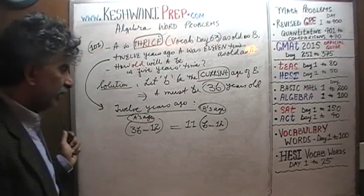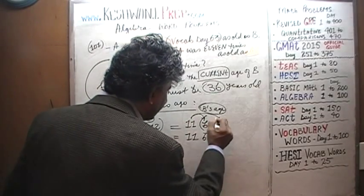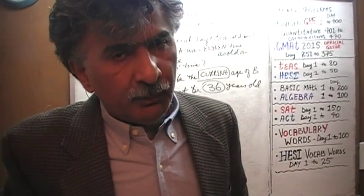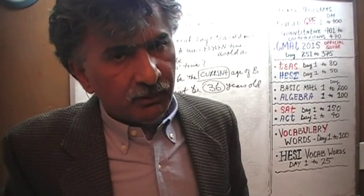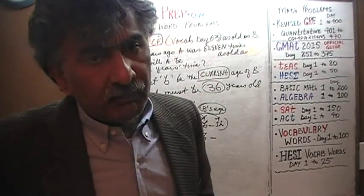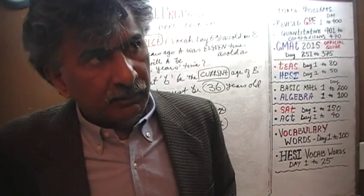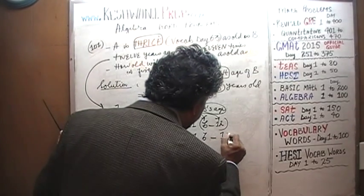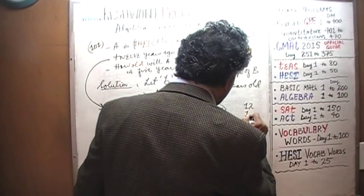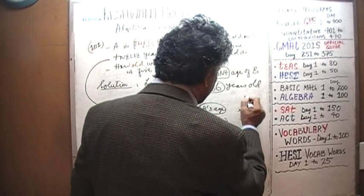Expanding: 11b minus 11 times 12. How much is 11 times 12? I know 11 squared is 121; add one more 11 and that gives 132. Or just compute directly: 11 times 2 is 22, carry 2, 11 times 1 is 11 plus 2 is 13 — so 11 times 12 is 132. On the right side we have 3b minus 12.